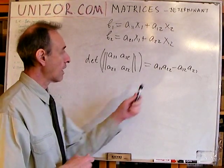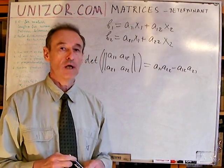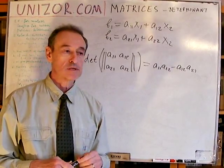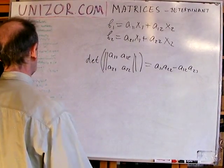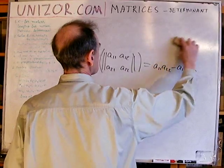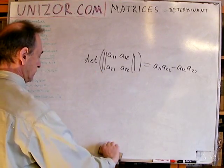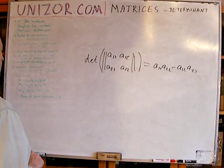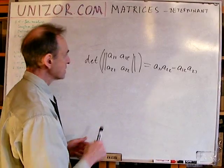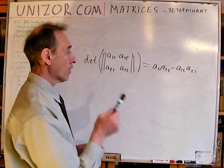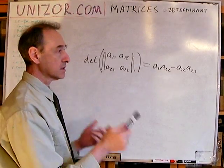After introducing this numerical characteristic of a 2x2 square matrix, let's investigate its properties. Property number one: if there is at least one row or one column in the matrix that is entirely equal to zero, then the determinant is equal to zero.